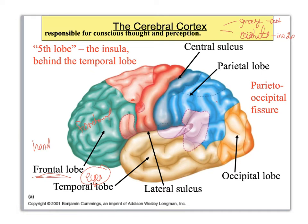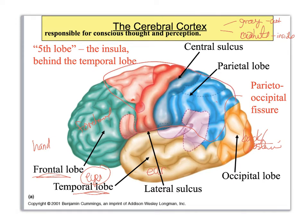Now come over to the temporal lobe — touch your ear. The temporal lobe is deep to your ear. Now put your hand on the back of your head, also called the posterior of your head — you're touching your occipital lobe. And this area on the side and top is the parietal lobe. Both the blue and pink and red areas shown are the parietal lobe.